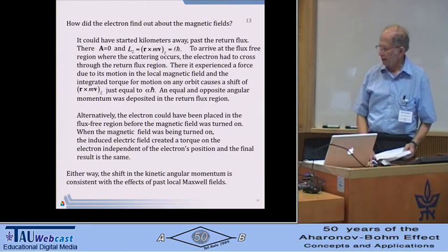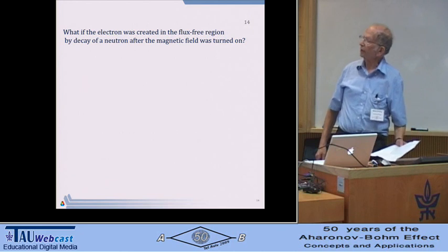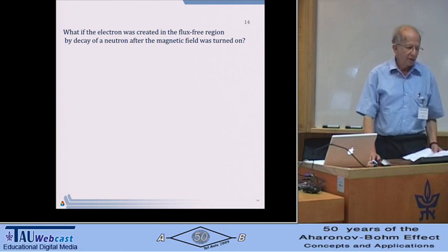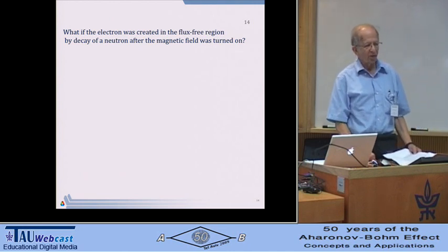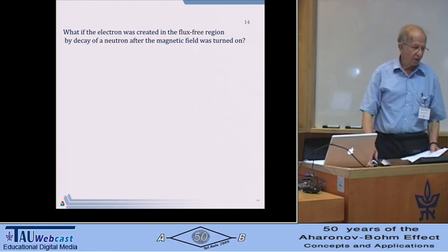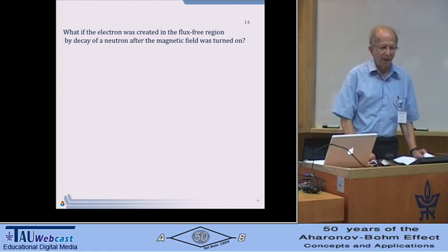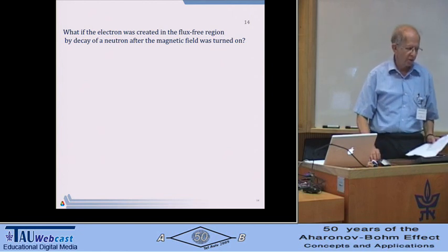So that sounds dandy. But what if the electron was created in the flux-free region by the decay of a neutron after the magnetic field was turned on and had no such experience? Well, of course, no theory is going to work which treats that electron differently in terms of what states it can have than other electrons which got there by other routes. But still, it's a little mystifying to me because I'm not seeing exactly how this electron got the word. Now, you can say that maybe that's something that I should not ask of elementary quantum mechanics. When I create an electron, I have to deal with a field theory that's more complicated.